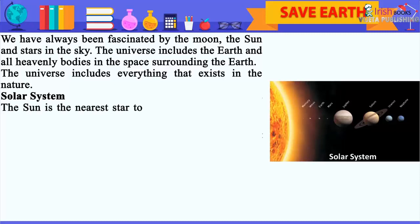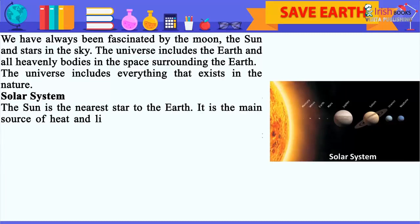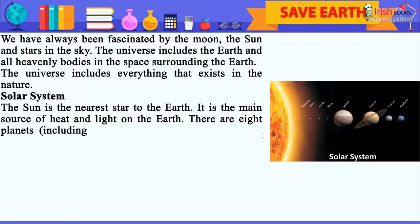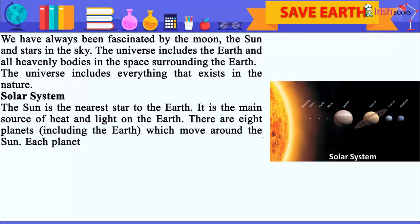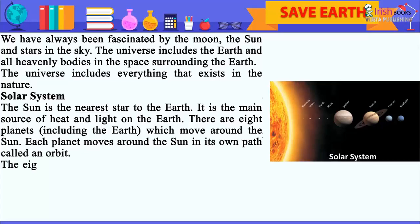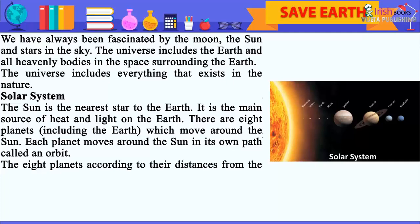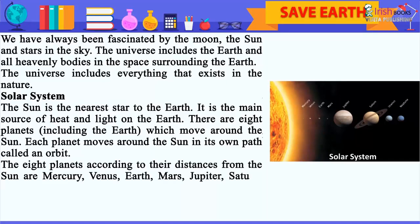Solar System. The sun is the nearest star to the earth. It is the main source of heat and light on the earth. There are eight planets including the earth which move around the sun. Each planet moves around the sun in its own path called an orbit. The eight planets according to their distances from the sun are Mercury, Venus, Earth, Mars,